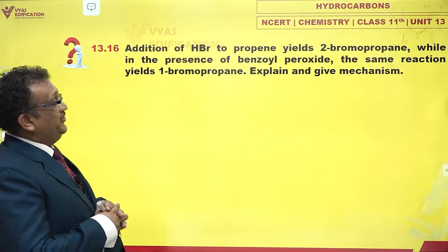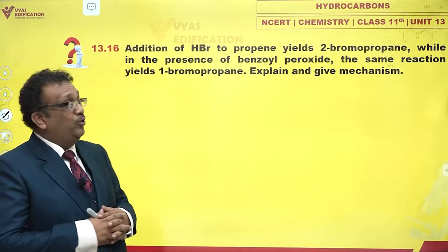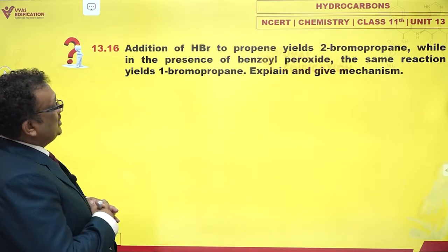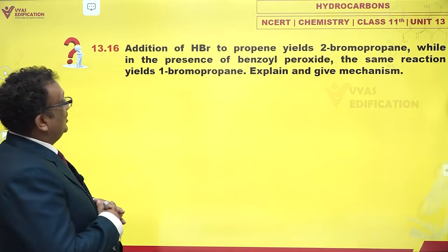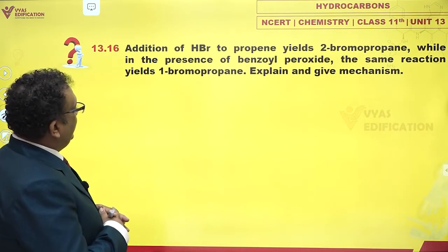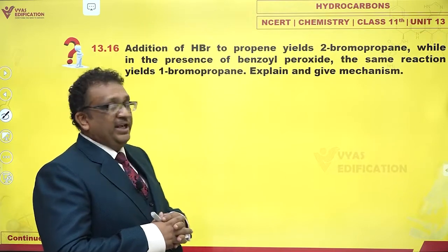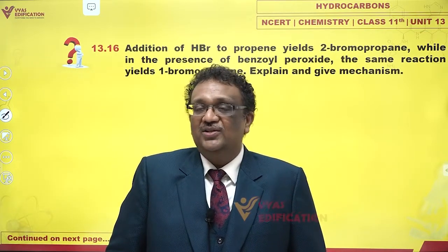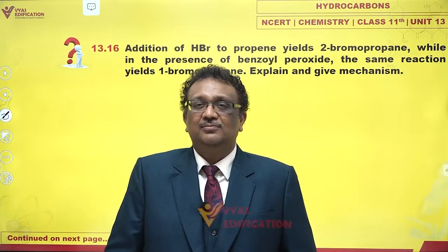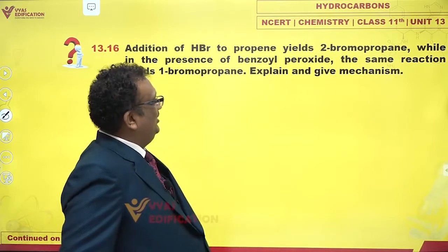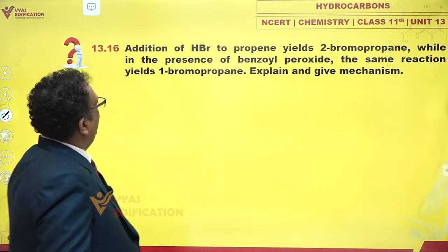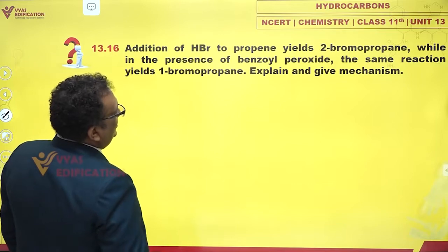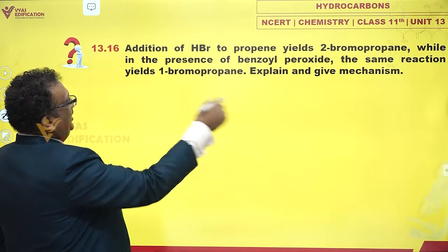Addition of HBR to propene yields 2-bromopropane, while in the presence of benzoyl peroxide the same reaction yields 1-bromopropane. Explain and give the mechanism. Let's see what is happening here — addition of HBR to propene yields 2-bromopropane.